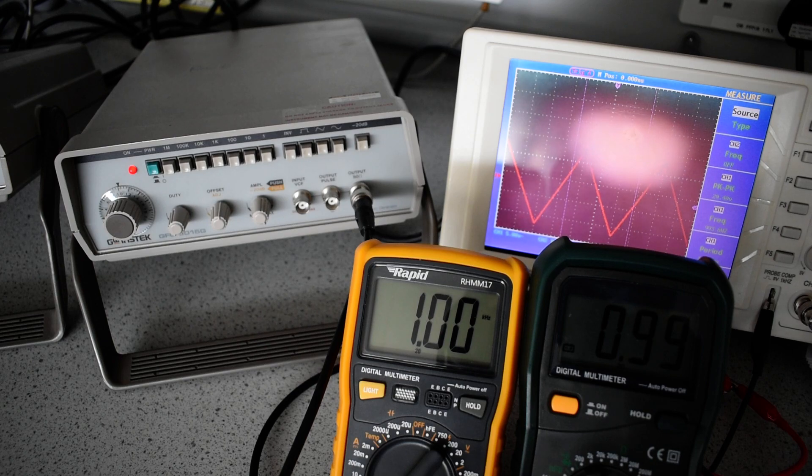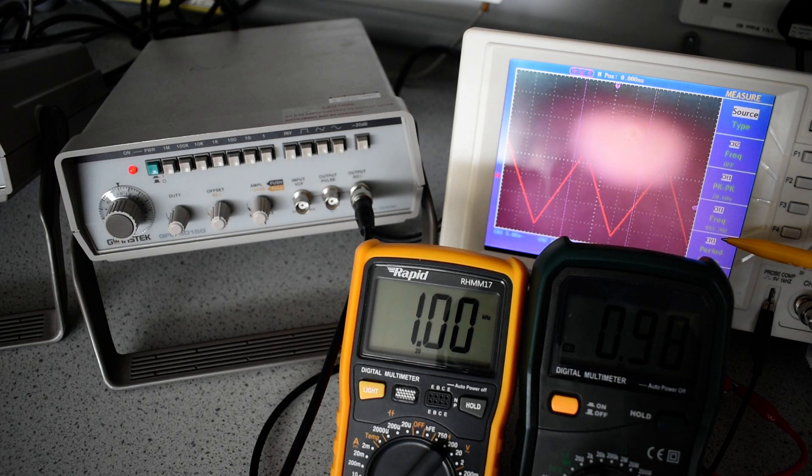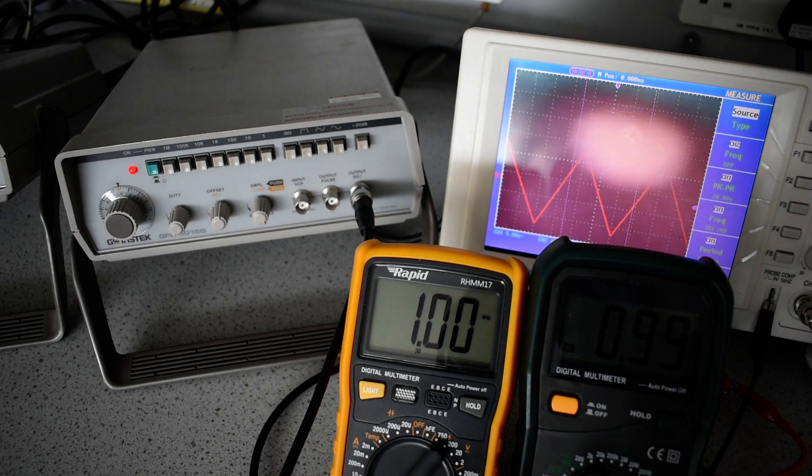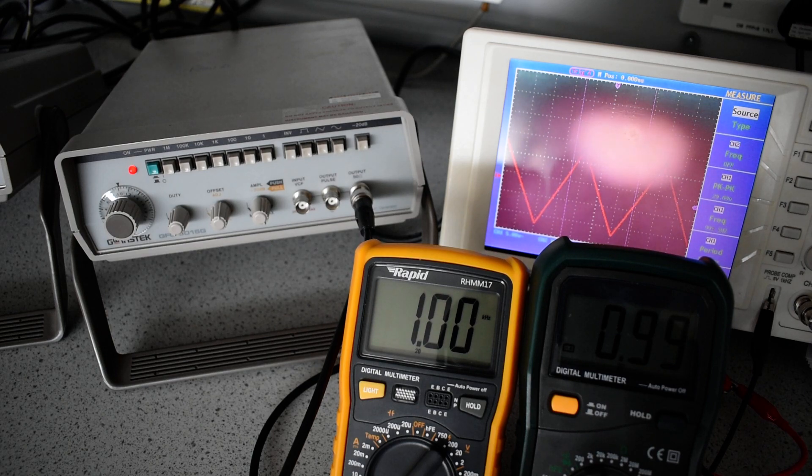So that is a range of 1050 and down to 950 Hz. On our DS25 we're measuring a frequency of 993. This meter is 990 Hz and the RH MM17 is 1000 Hz.